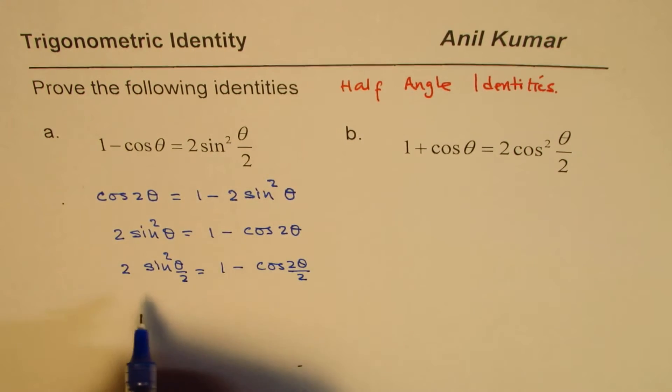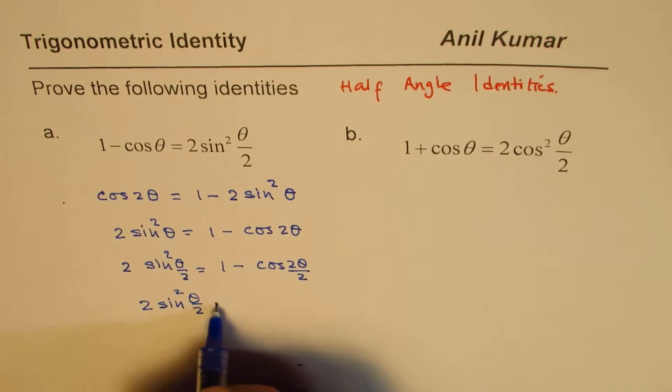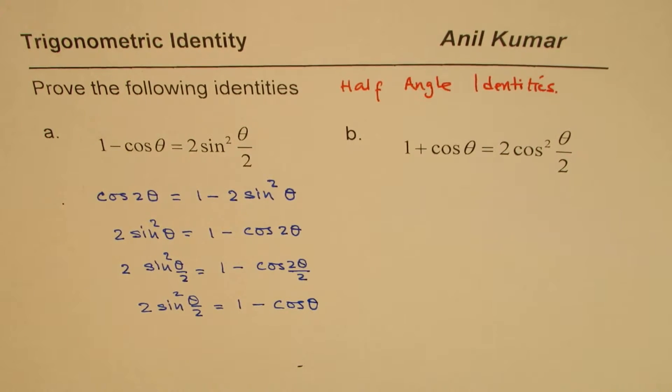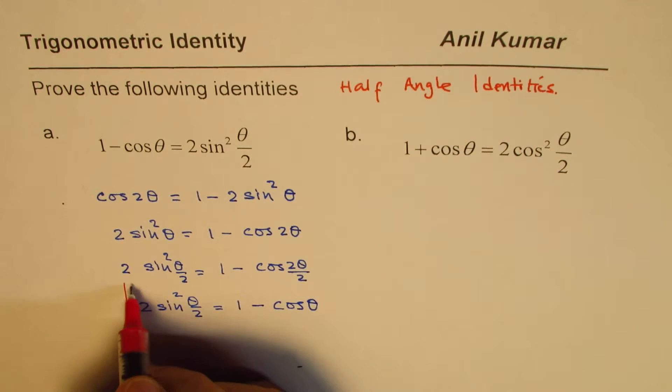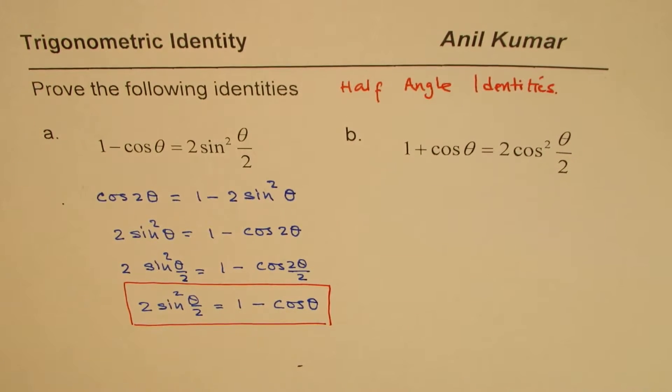So which is 2 sine square theta by 2 equals to 1 minus cos theta. So that is what we wanted to prove. 1 minus cos theta equals to 2 sine square theta by 2.